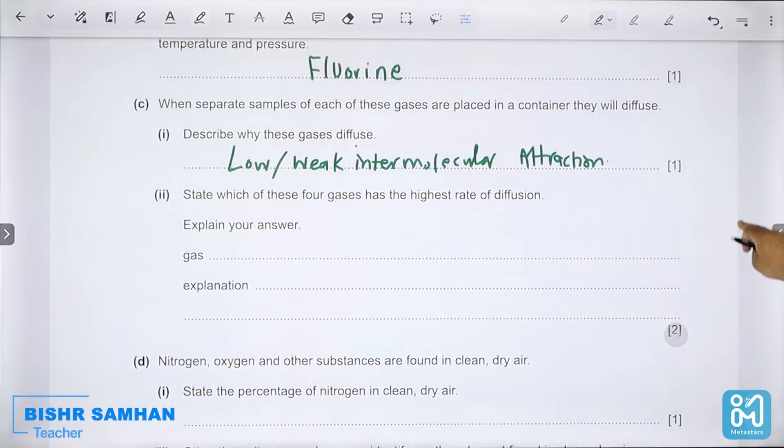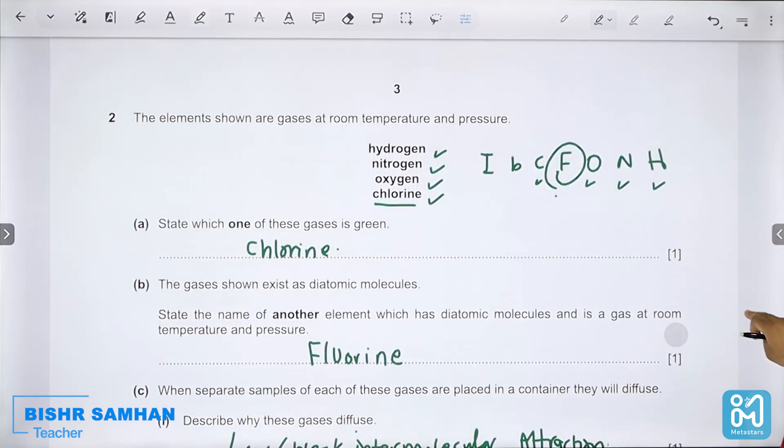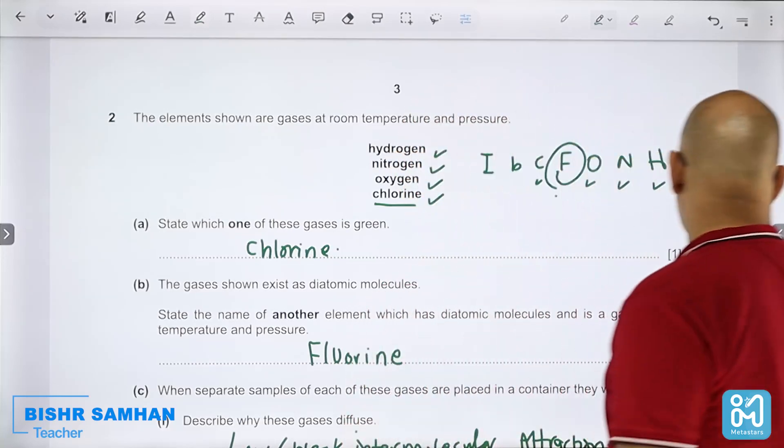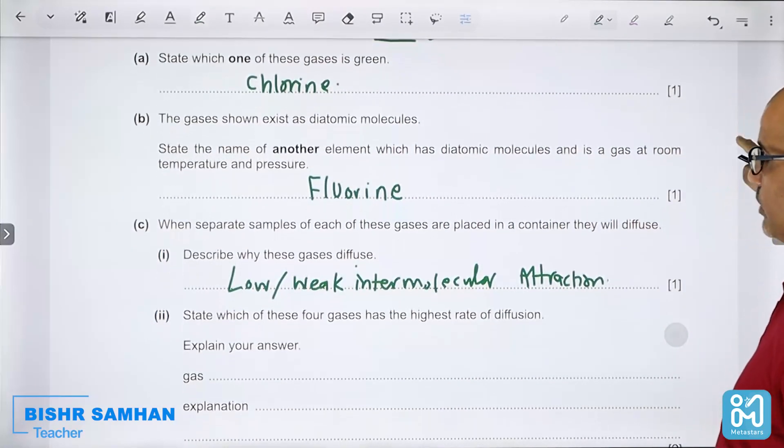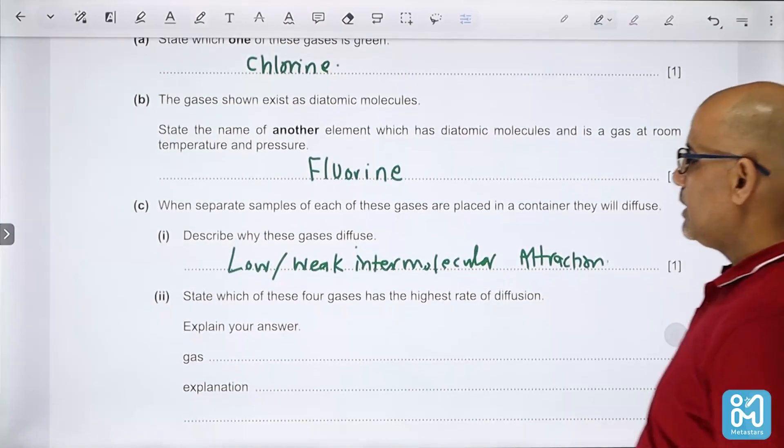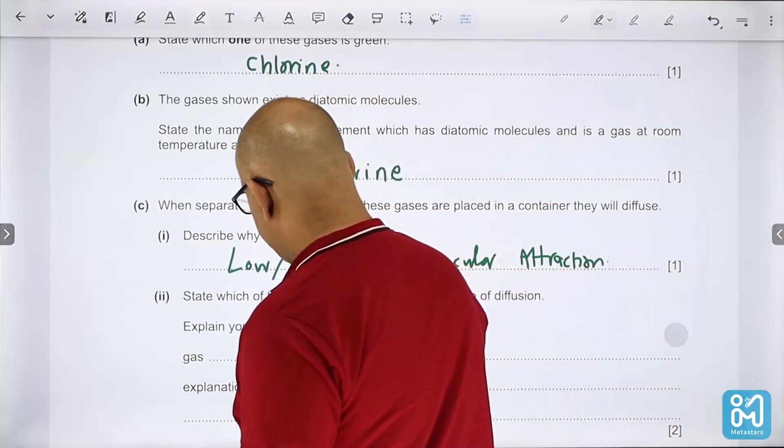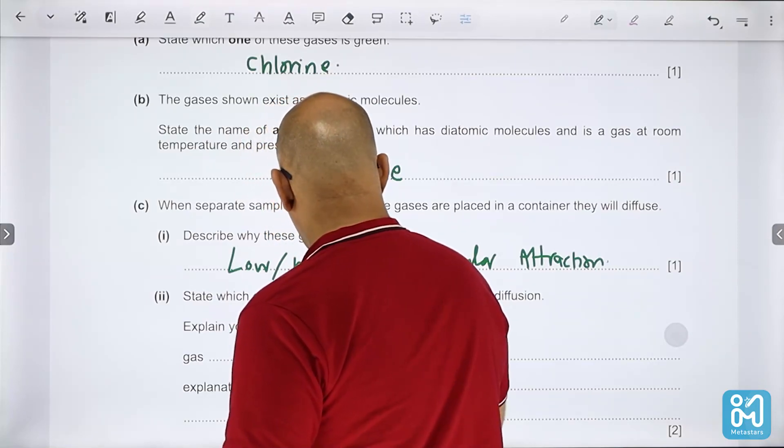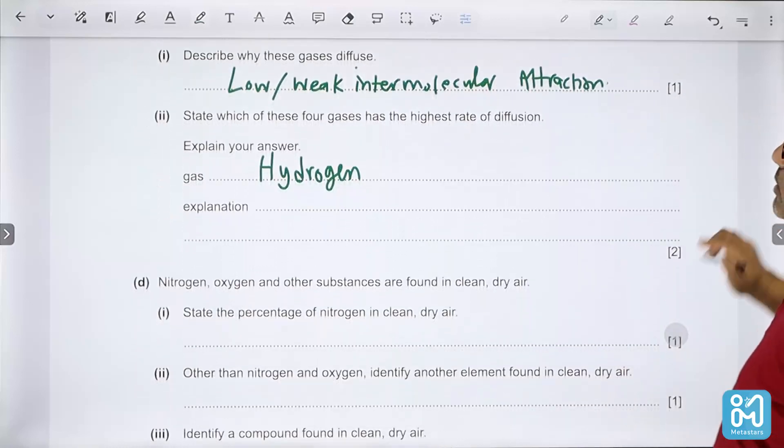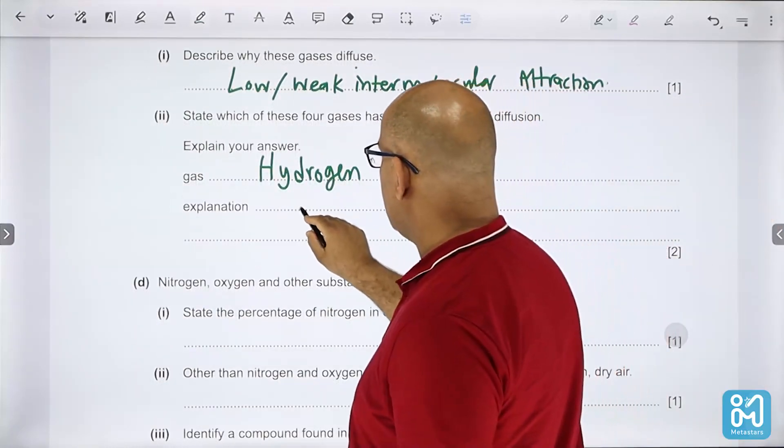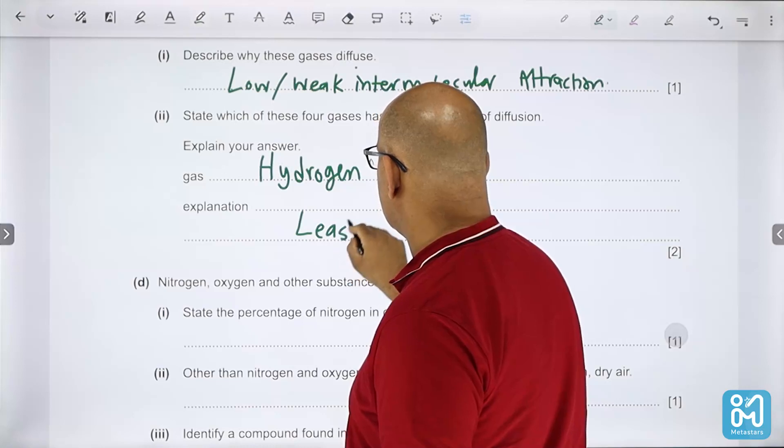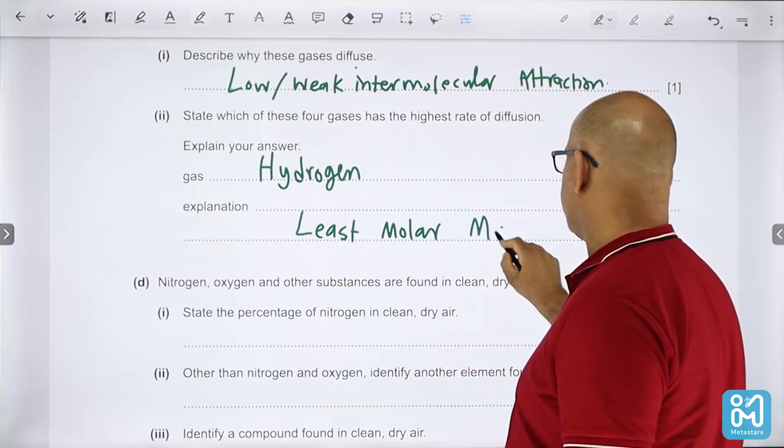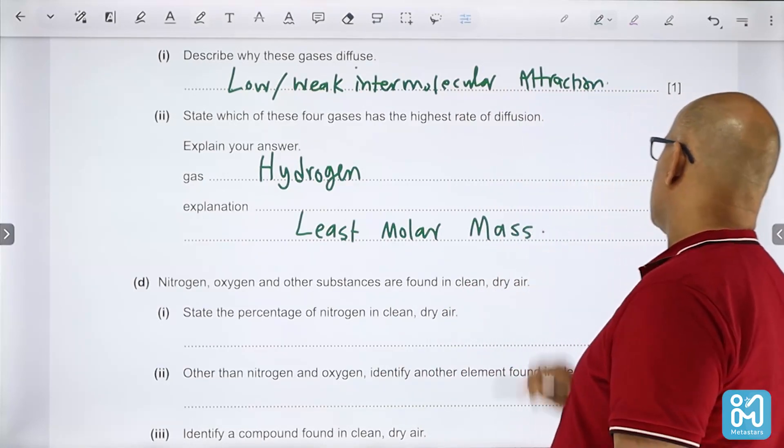State which of these four gases has the highest rate of diffusion: hydrogen, nitrogen, or oxygen. It's hydrogen, because it has the least molar mass.